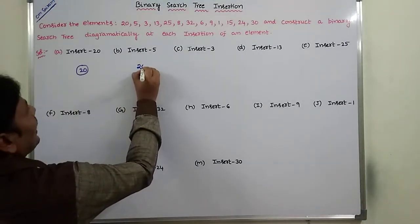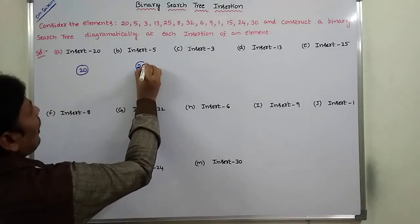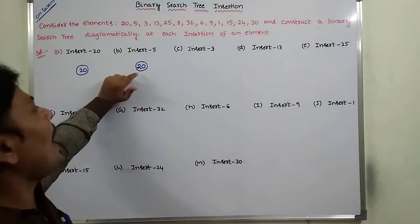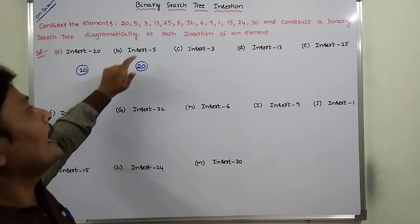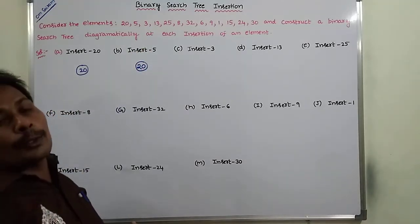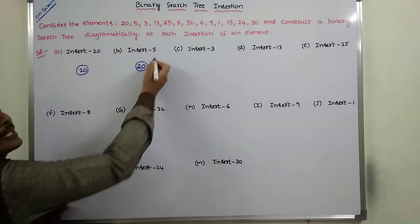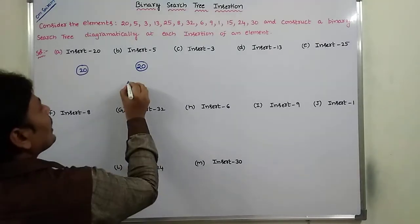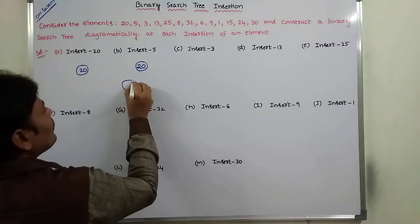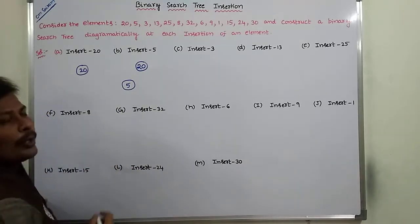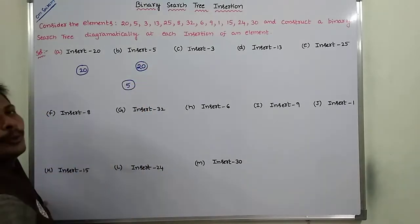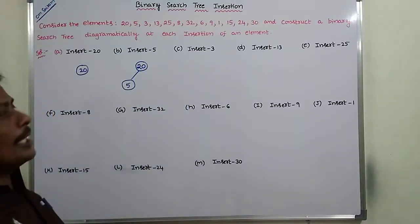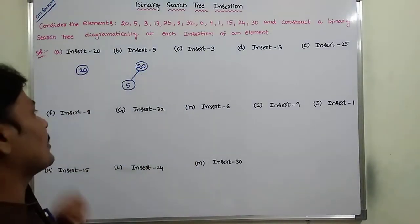Next, we are inserting element 5 into the binary search tree. Element 5 is compared with the root node 20. It is less than the root node, so it can be inserted as the left child of root node 20. We create a new node and insert that value into that node. So 5 is the left child of 20. Now it becomes a binary search tree.